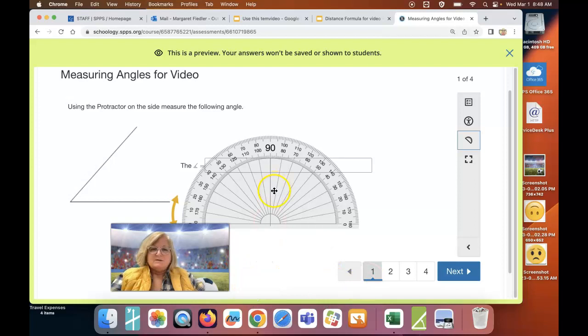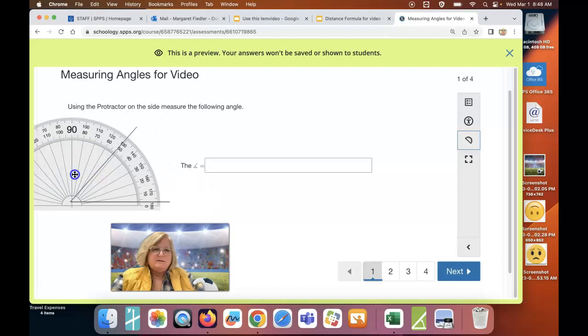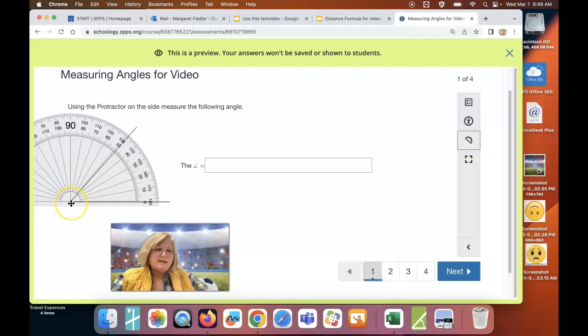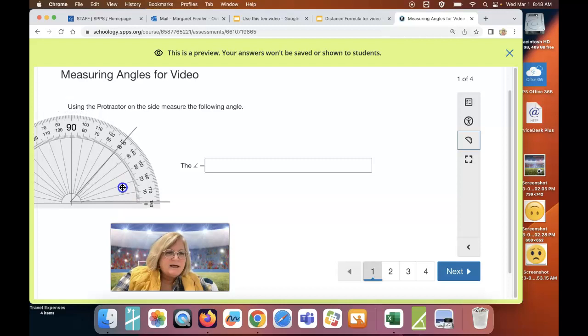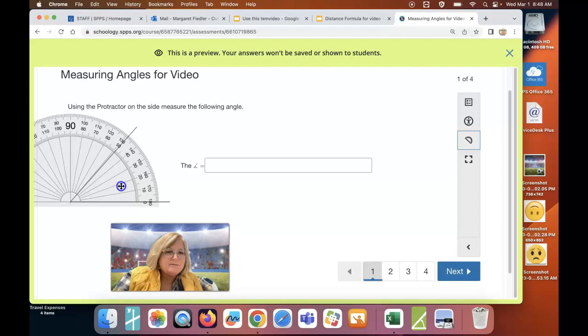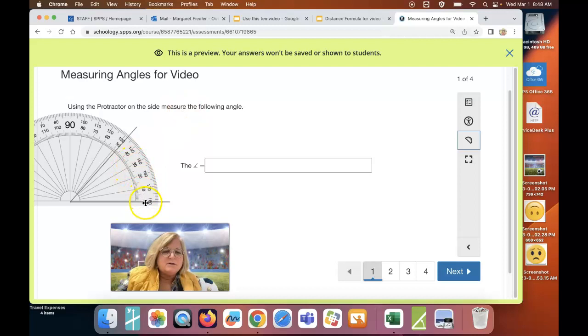If I take the protractor and I put it on top of the angle right here, the vertex of the angle has to lie on the zero point, and the line has to line up with the side of the angle. So right here, I would look on the inside because I'm starting at zero, and the opening of the angle measures 40, 45, 48 degrees.